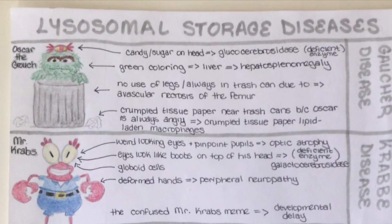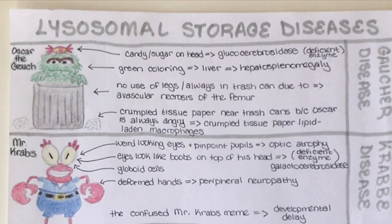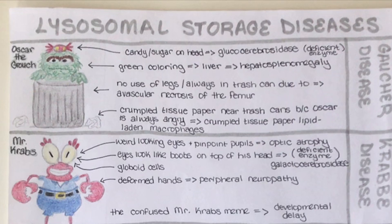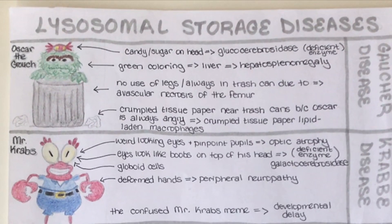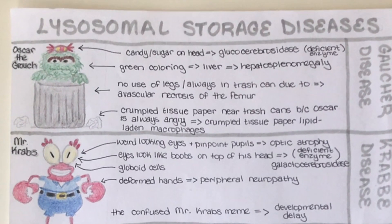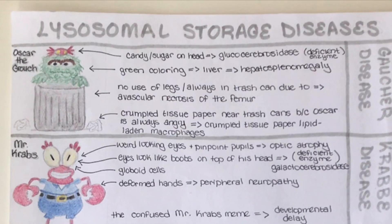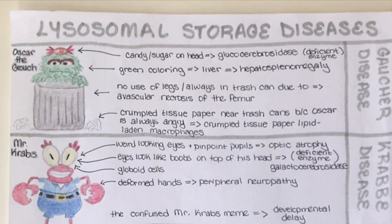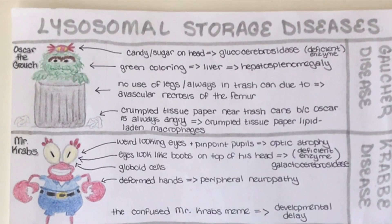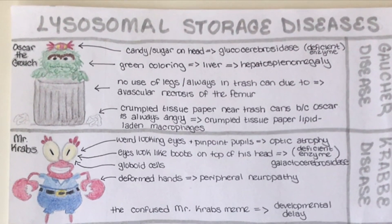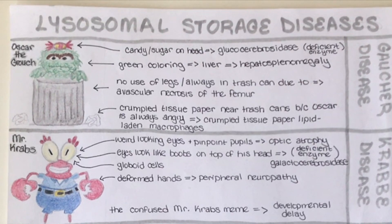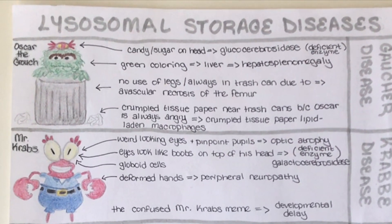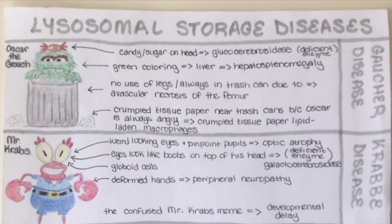Oscar is always in a trash can, so we assume he has no use of his legs because he has avascular necrosis of the femur — which is also common in individuals with Gaucher's disease. Next, the crumpled tissue paper surrounding the trash can helps us remember the crumpled tissue paper lipid-laden macrophages seen in Gaucher's disease. Key findings: hepatosplenomegaly, osteoporosis, avascular necrosis of the femur, and Gaucher cells resembling crumpled tissue paper on histology.